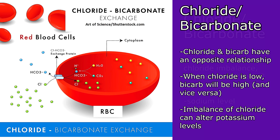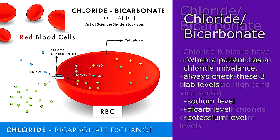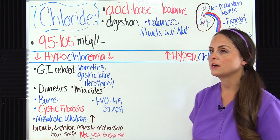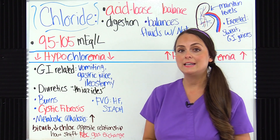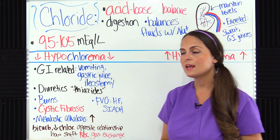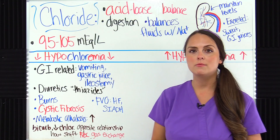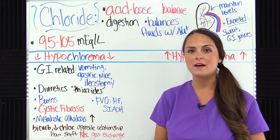That is why whenever you're taking care of a patient with a chloride imbalance, as a nurse you want to be looking at three other lab levels: the sodium level, the bicarb level, and the potassium level. Chloride also plays a role in digestion because we need it to make hydrochloric acid, and it plays a role in balancing the fluids in our body with the help of sodium.